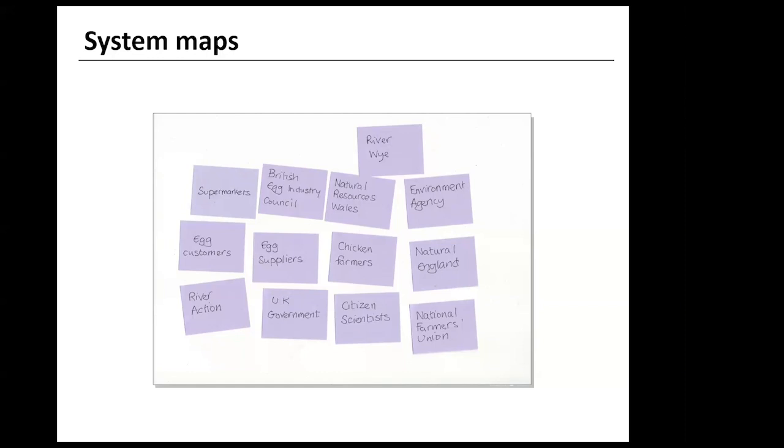A rich picture can do a very good job of identifying the different actors or entities that are involved in a situation, and it's useful next to work out which ones of them are part of the system of interest. To do that, we can draw a system map. I find that the best way to do this is to start out with a pad of small post-its and a large sheet of paper or flip chart, and on each post-it I write the name of one of the actors.